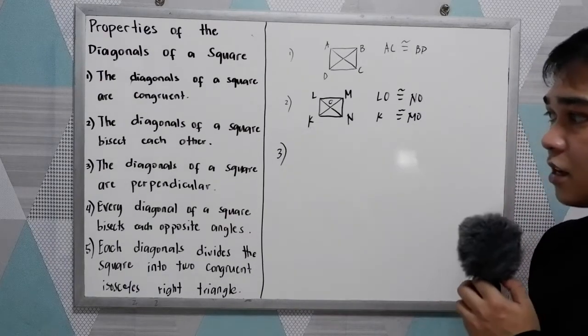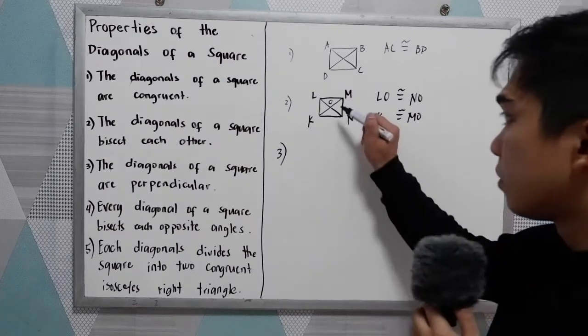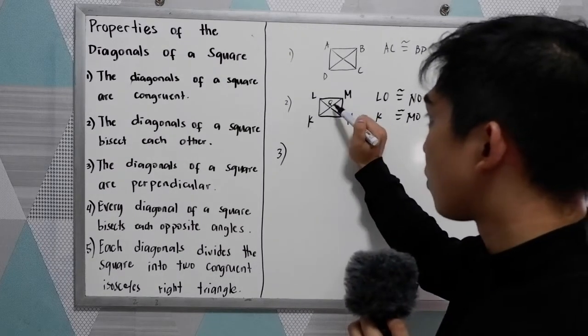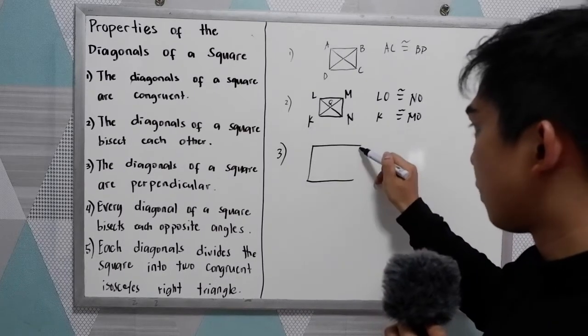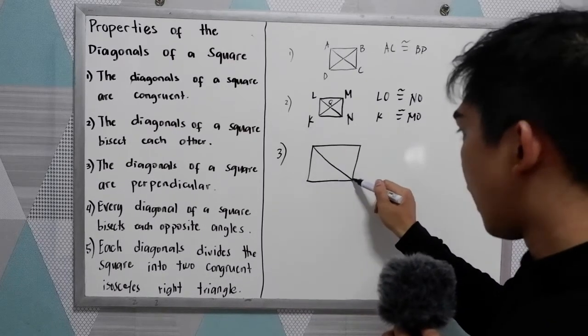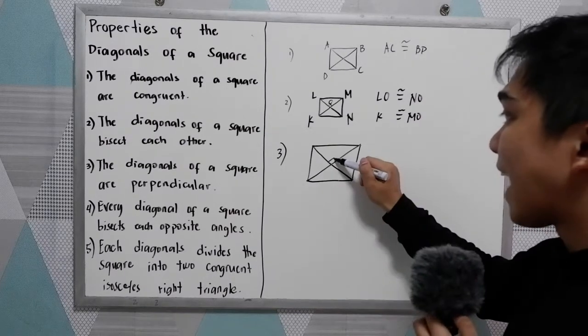Number three, the diagonals of a square are perpendicular. So perpendicular, it will form a square angle, 90 degree angle.